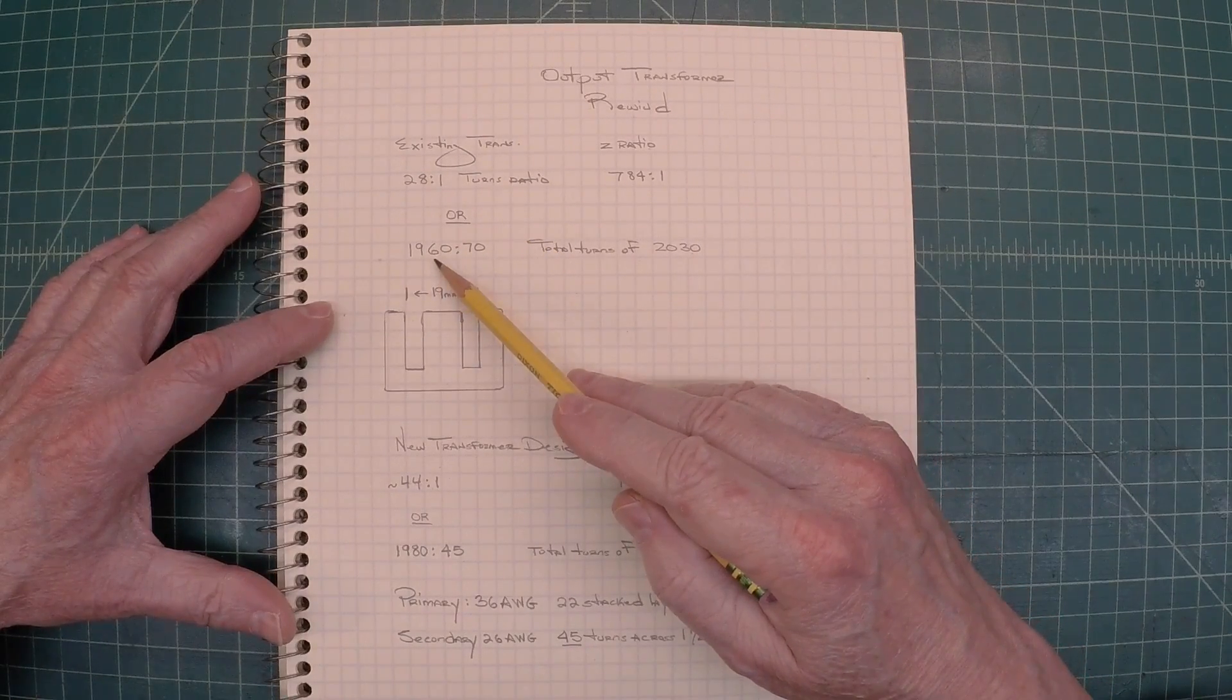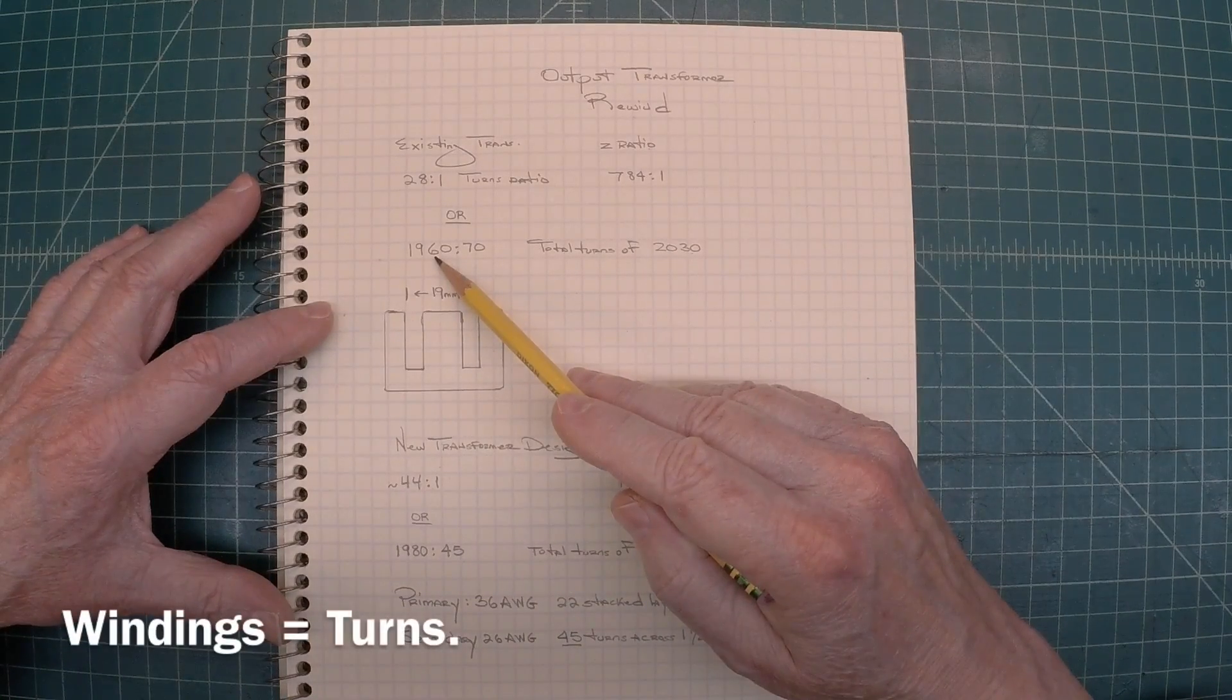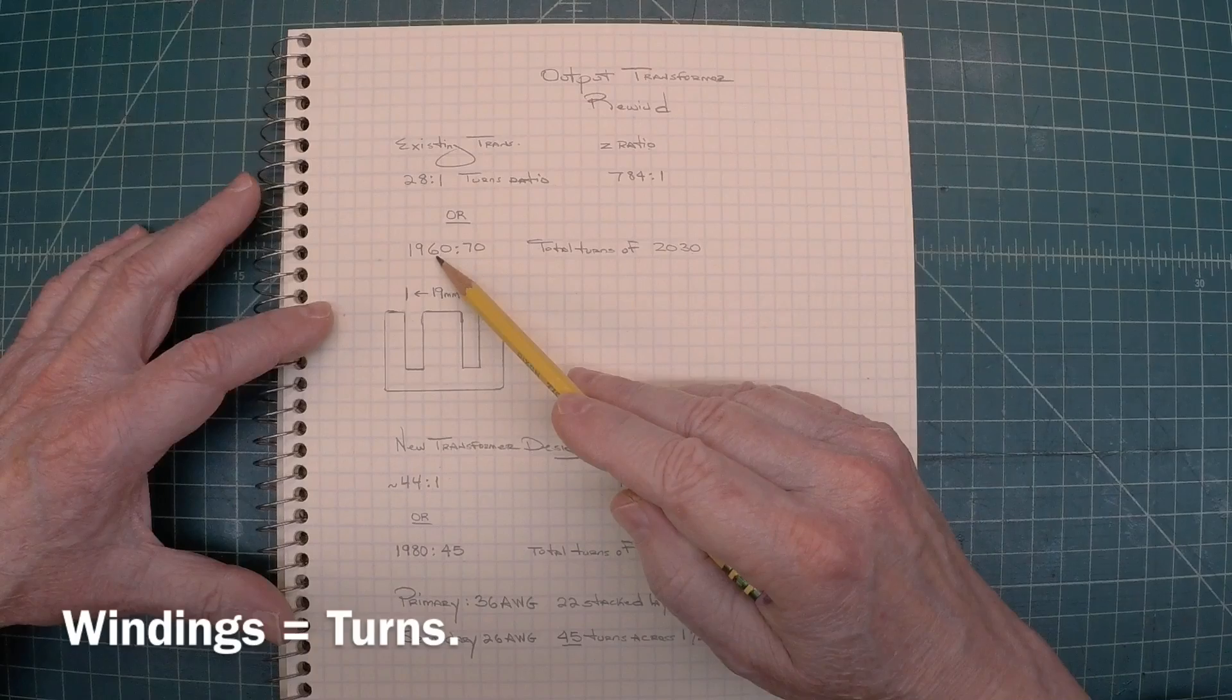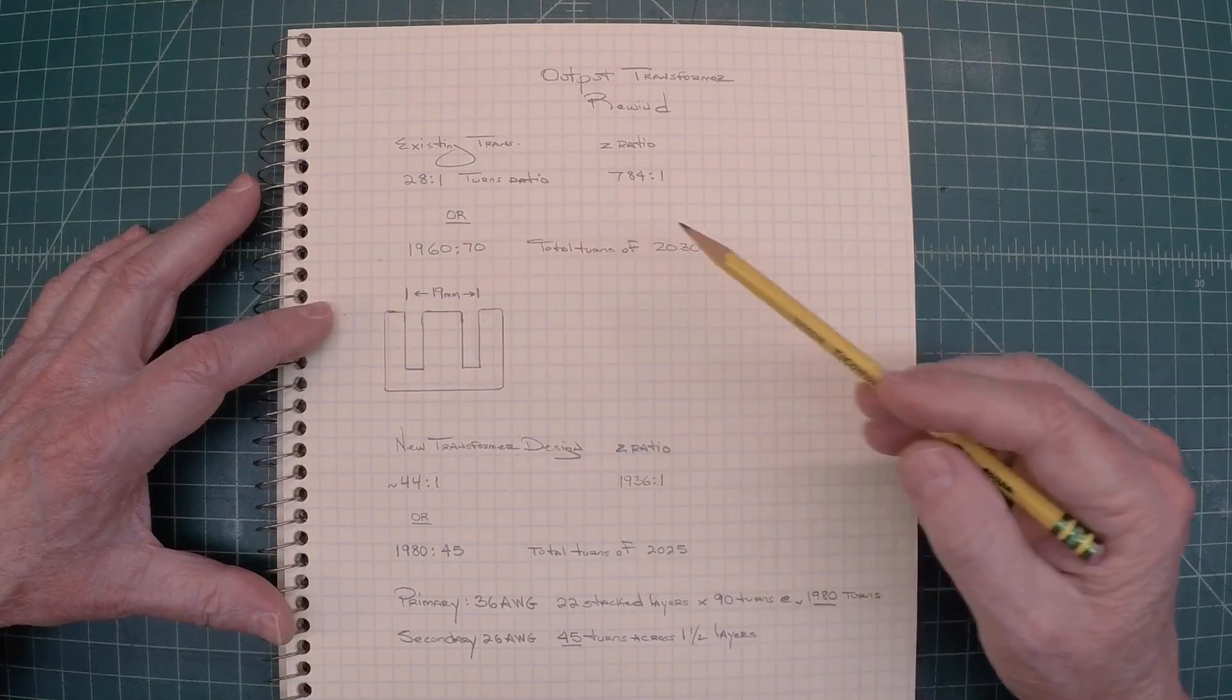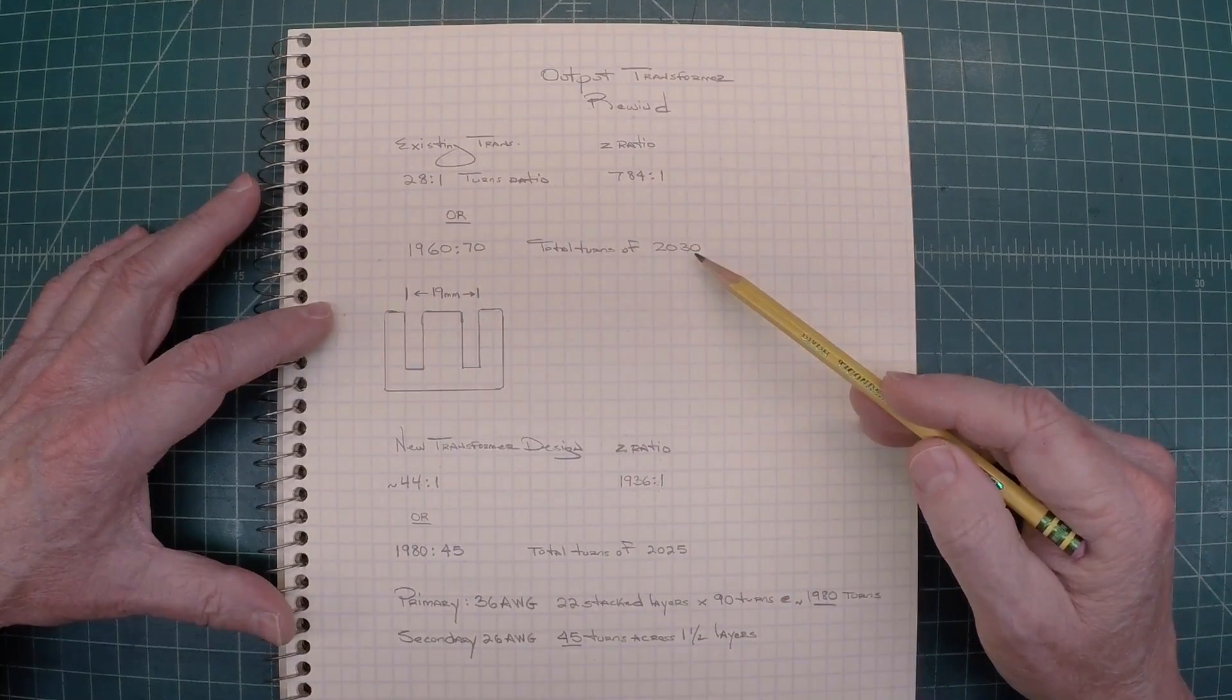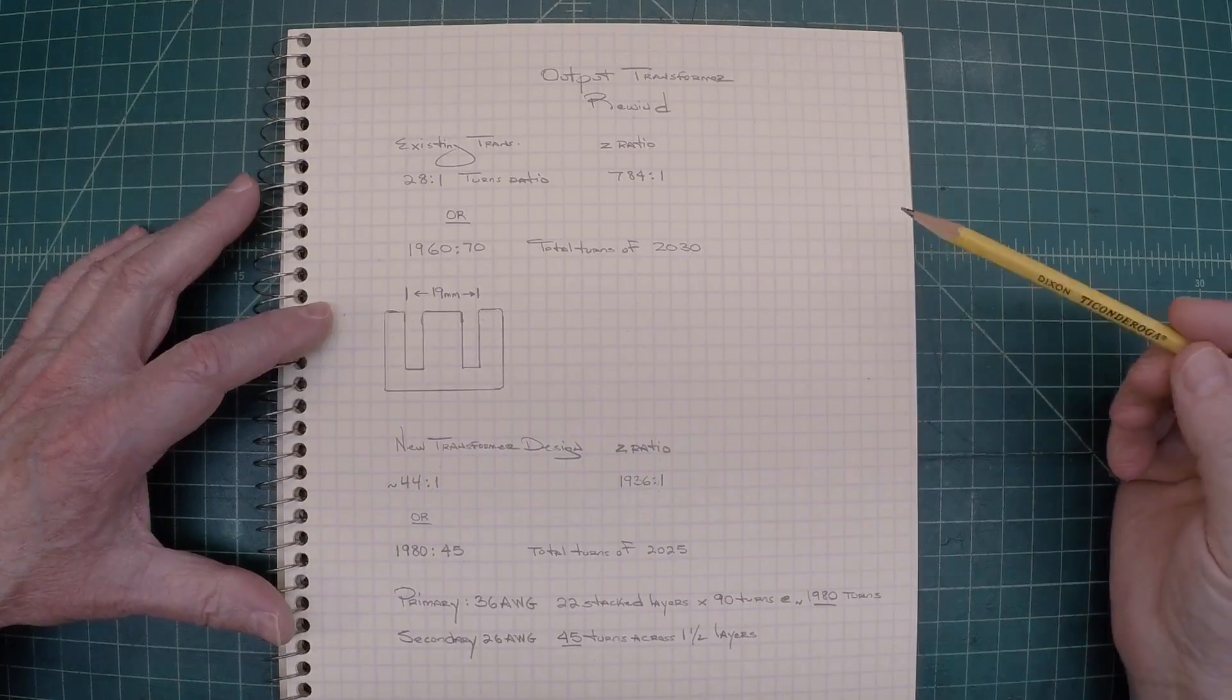Here's the existing transformer windings. Just to let you guys know, there's roughly 1960 windings on the primary side and 70 on the secondary side. So we've got a total of 2030 windings there. That will make your eyes hurt for sure.